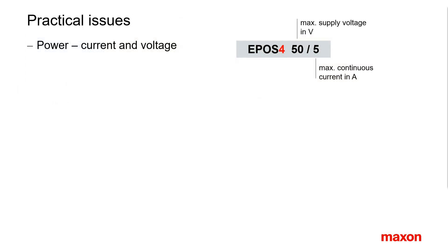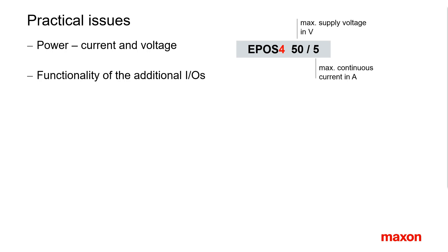Some practical issues when selecting a controller: power. The main difference between the different versions within one controller family is the supply voltage range and the current capabilities, as indicated in the designation. The maximum current rating is typically two to three times higher than the continuous current rating and can be sustained for up to a minute. Between different controller types, there may also be differences in the number and functionality of the additional IOs. Select the version that best fits your application.